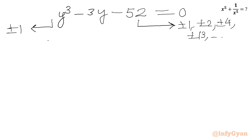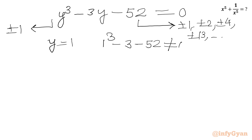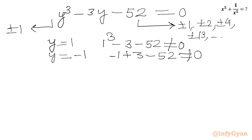We take the ratio of the constant term to the leading coefficient. If we plug in y equal to 1, we get 1 cubed minus 3 times 1 minus 52, which is not zero. If we plug in y equal to negative 1, we get minus 1 plus 3 minus 52, which also does not satisfy our equation.